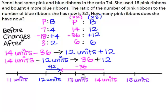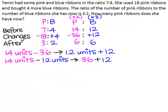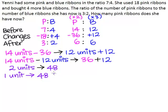Therefore, we have 36 plus 12. 14 units minus 12 units will give us 2 units, and these 2 units represent 36 plus 12, which gives us 48. To find the value of 1 unit, we will take 48 and divide it by 2, and this will give us 24. The only purpose of this new ratio is to equate the unit values of the two elements as we have done in this statement.